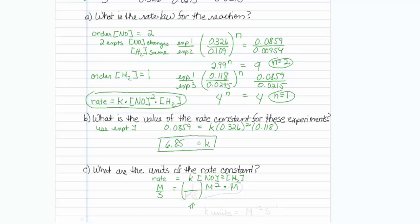So I know I need seconds on the bottom, because the other side has seconds on the bottom. And then it looks like I also need M squared on the bottom. And if you look, if I take this thing in the parentheses and multiply it through, what am I left with? Molar per second.